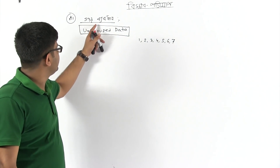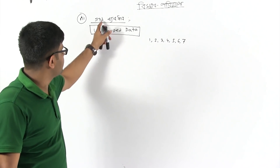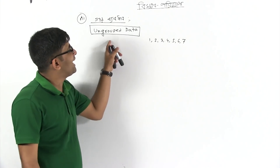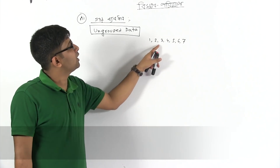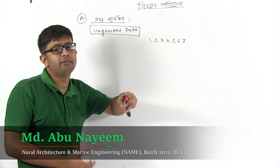We have to go to measure of dispersion for ungrouped data. Suppose 1, 2, 3, 4, 5, 6, 7.